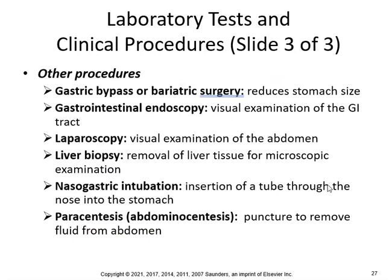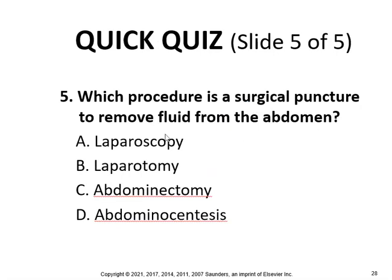Here are some surgeries. There's gastric bypass or bariatric surgery, which reduces the stomach size — you can also bypass the entire stomach. GI gastrointestinal endoscopy is a visual exam of the GI tract. Laparoscopy is a visual exam of the abdomen. Liver biopsy is removal of liver tissue for microscopic examination. Nasogastric intubation is insertion of a tube through the nose into the stomach. Paracentesis or abdominocentesis is a puncture to remove fluid from the abdomen — centesis means puncture to remove fluid.